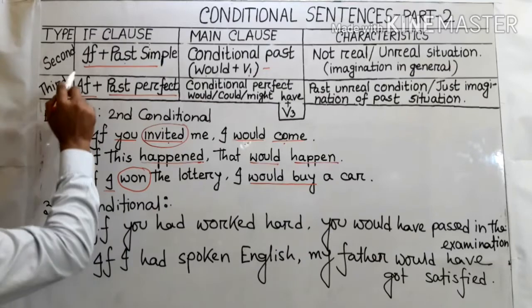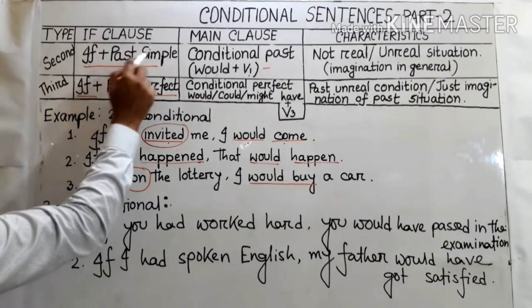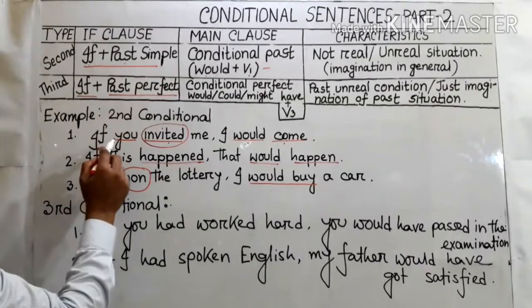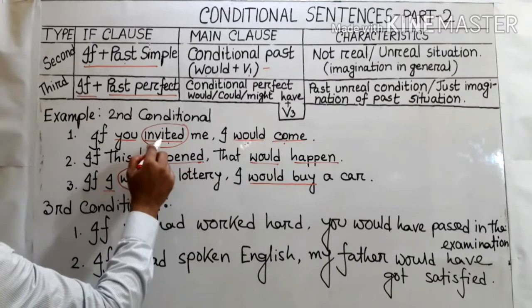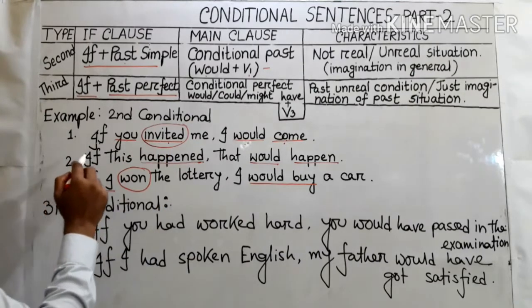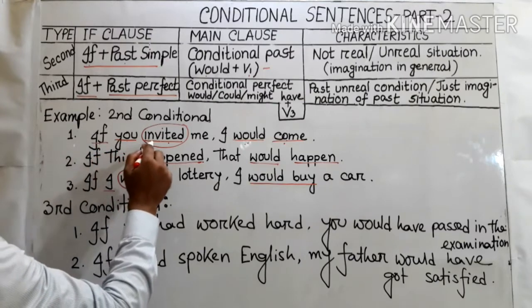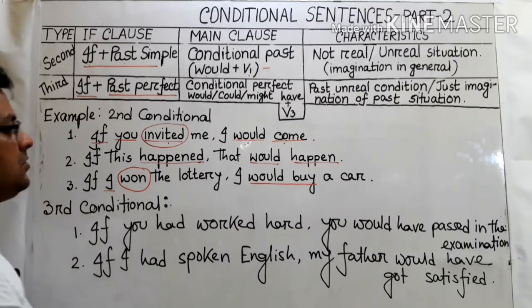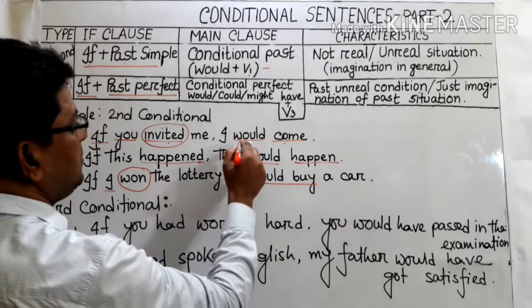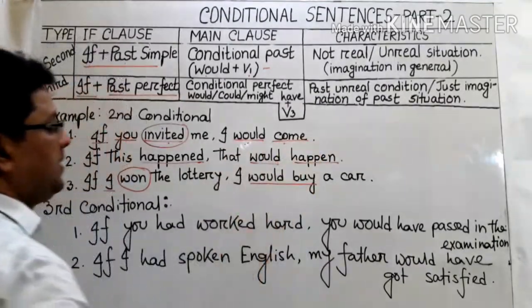From the table, the if-clause contains 'if' plus past simple — after the subject I have used the past form of the verb. The main clause contains the conditional past, that means 'would' plus the base form of the verb.